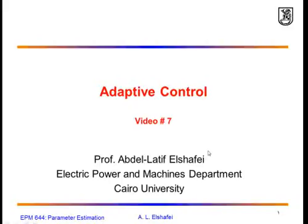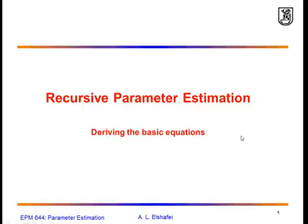Bismillah ar-Rahman ar-Rahim. This is the seventh video on Adaptive Control, a course taught at the Faculty of Engineering in Cairo University. Today we are going to derive the basic equations of the recursive parameter estimation based on the least squares. In the last video we showed the basic equations, and we indicated that they can be used as long as we have a system which is linearly dependent on the unknown parameters.